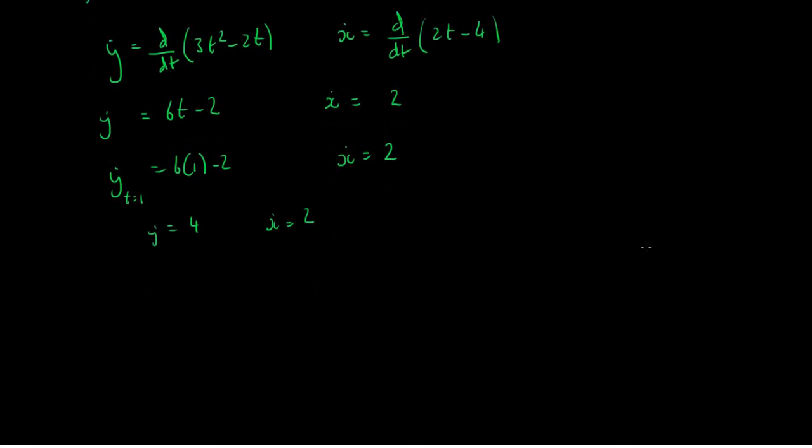So if we want to find the speed when v equals 1, modulus of v when t is equal to 1 is equal to the square root of these things squared, of 4 squared plus 2 squared, the square root of 20, which is 2 root 5. So now we have our speed of the particle at time t equals 1.